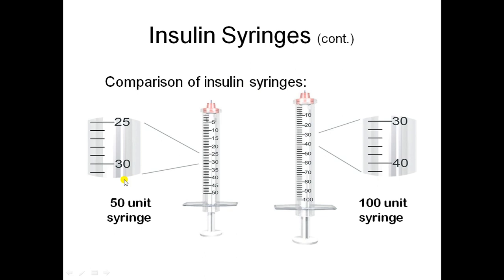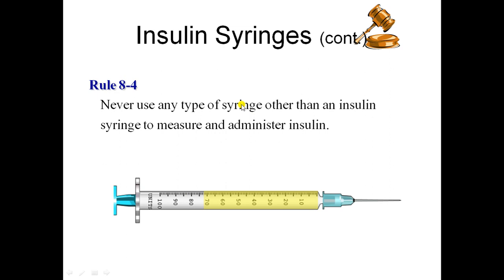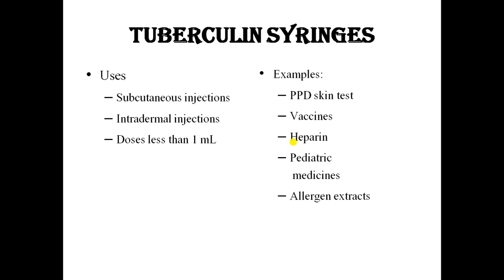When comparing insulin syringes, the 50-unit syringe and the 100-unit syringe have different calibration markings. An important rule is to never use any type of syringe other than an insulin syringe to measure and administer insulin. Whenever you are giving insulin to a patient, you must only use an insulin syringe, because insulin syringes are calibrated in units.